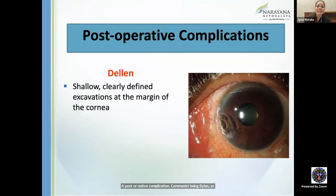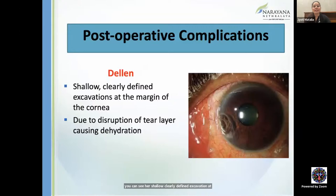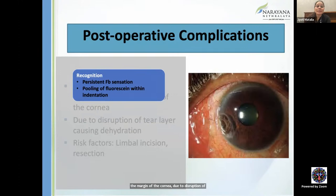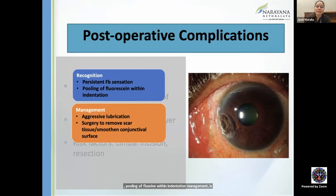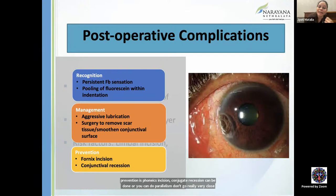Dellen: a shallow, clearly defined excavation at the corneal margin due to disruption of the tear layers causing dehydration. Risk factors: limbal incision, large resections. Recognition: persistent foreign body sensation, pooling of fluorescein within the indentation. Management: aggressive lubrication, surgery to remove scar tissue and smooth the conjunctival surface if needed. Prevention: fornix incision, conjunctival recession, or paralimbal approach; ensure the patient achieves complete eye closure.